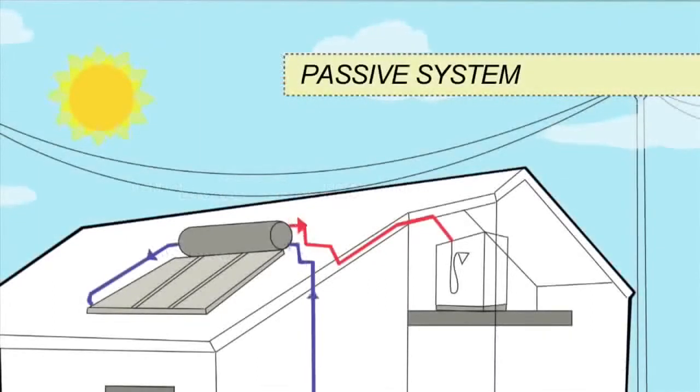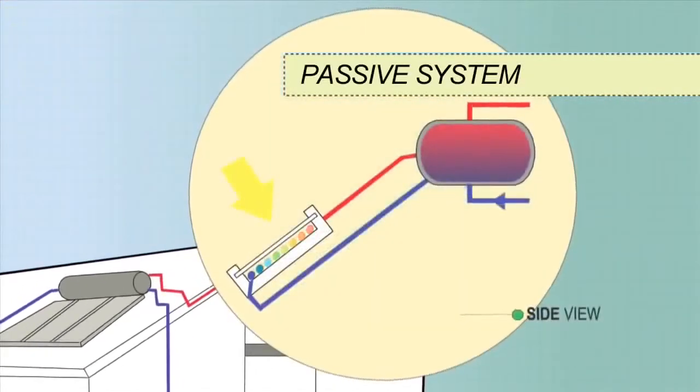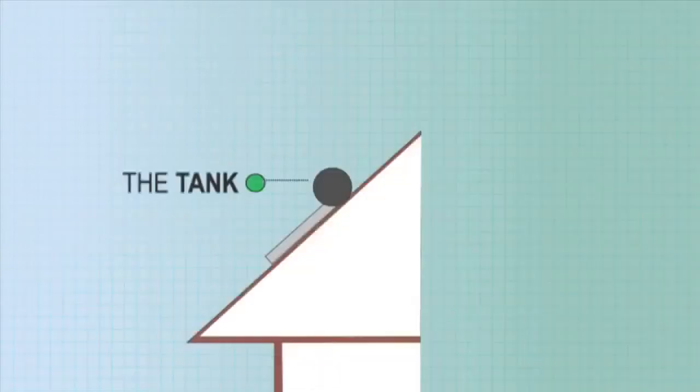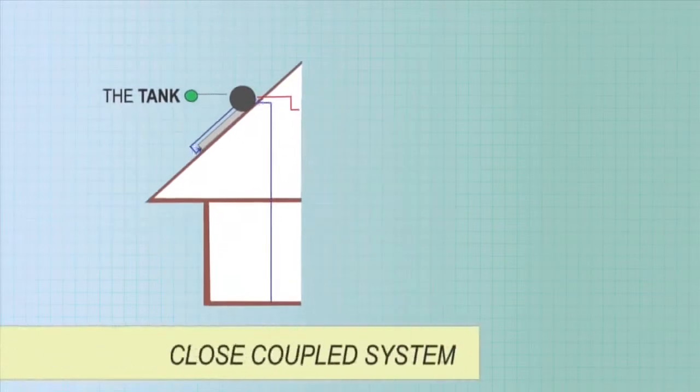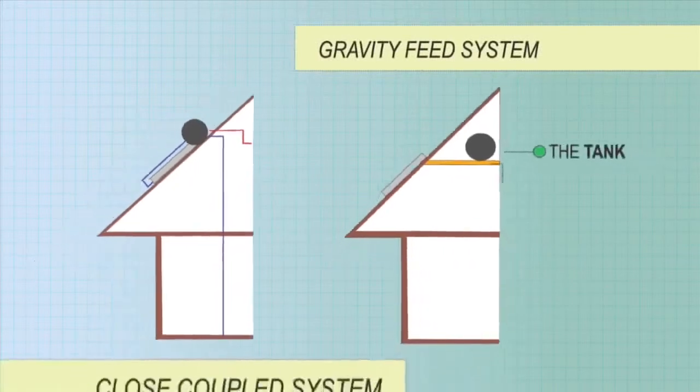In passive systems, also known as thermosiphon systems, the tank sits above the collectors. Cold water sinks into the collectors whilst warmer water rises unassisted from the collectors into the tank. The tank may sit on the roof with the collector, a close coupled system, or within the roof cavity above the collector, a gravity feed system.